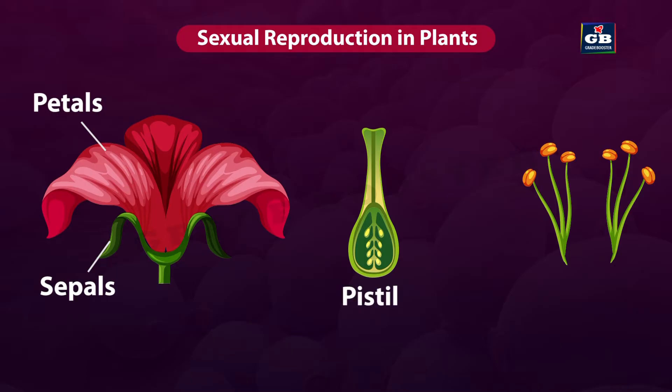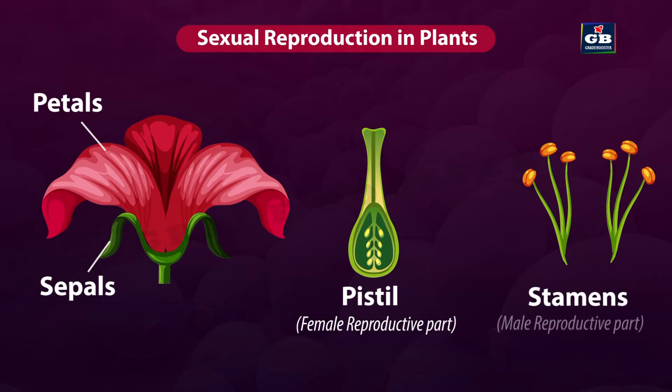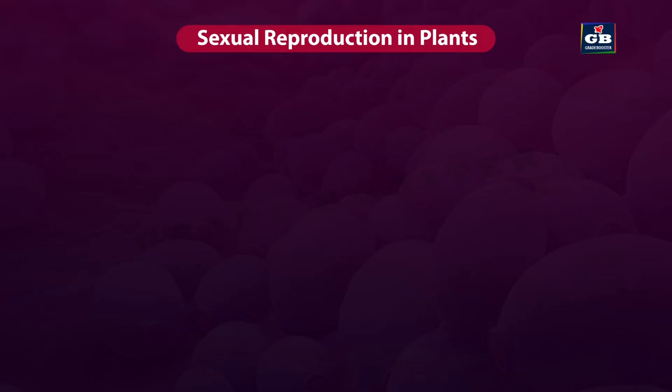Pistil is the female reproductive part of the flower. And this is stamen. It is the male reproductive part of the flower.